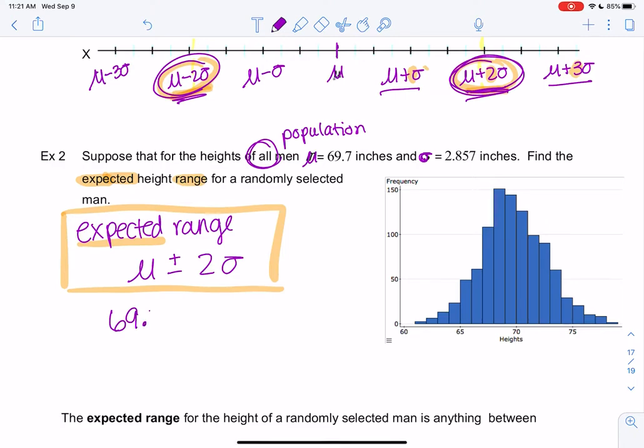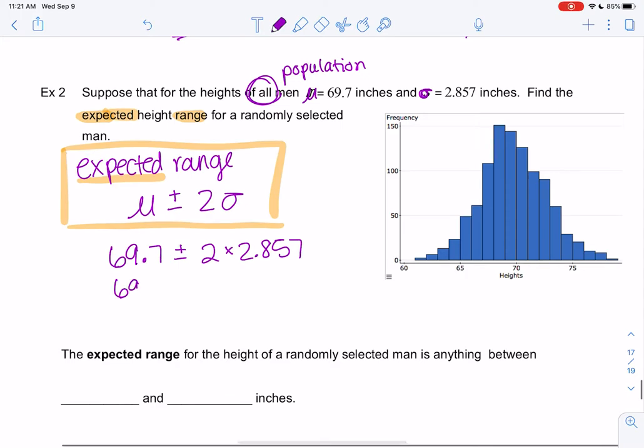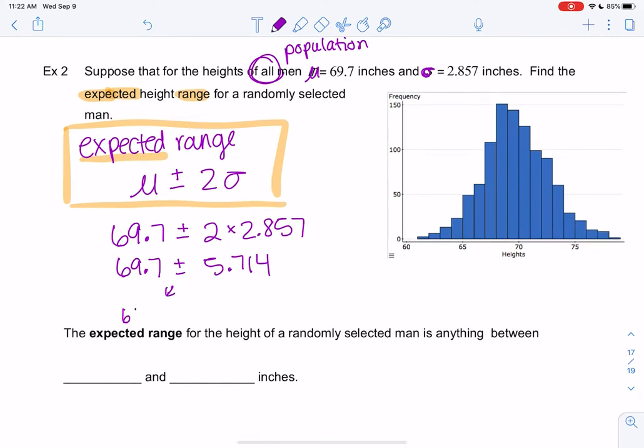We're going to take the mean 69.7 plus or minus 2 times 2.857. If you want the calculator to do this correctly, do the multiplication first, otherwise it might not understand your order of operations. So it'll be 69.7 plus or minus 5.714. I'm going to subtract first and then add.